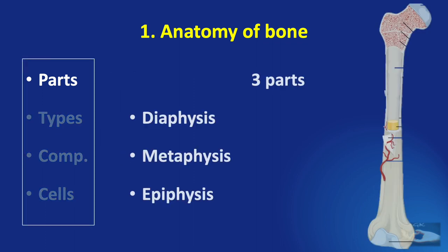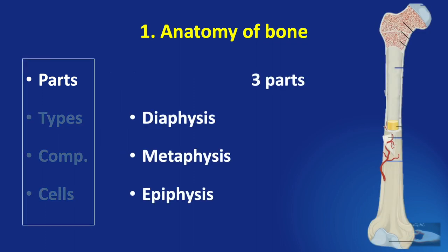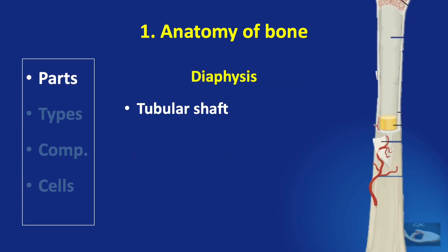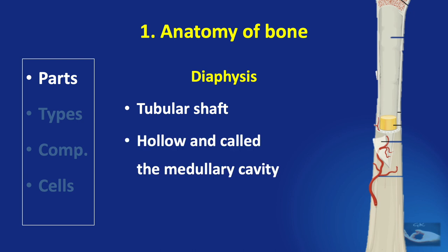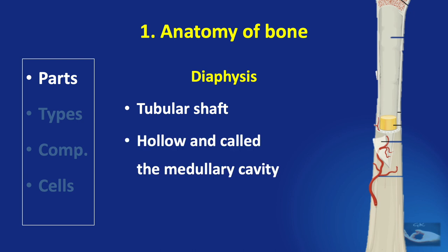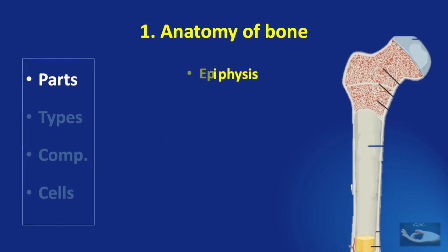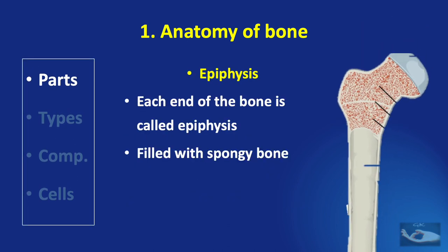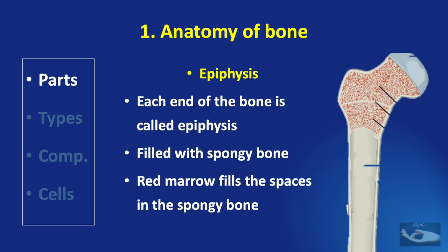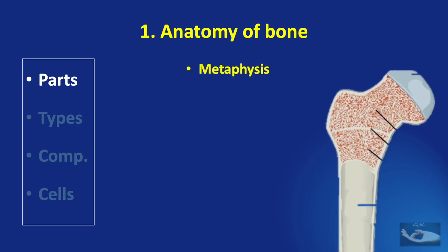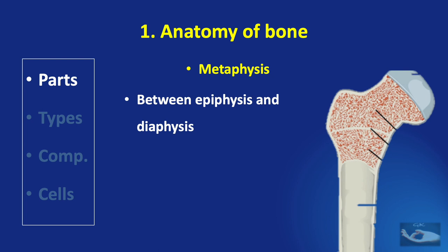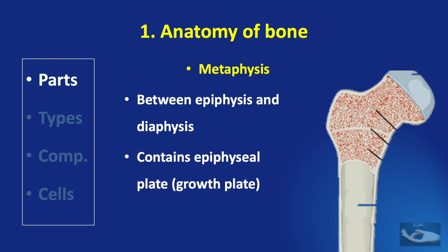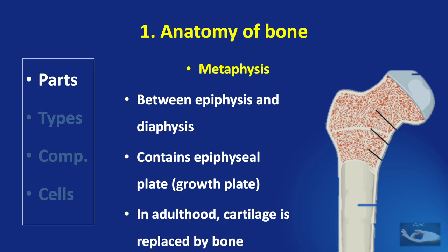The long bone consists of mainly three parts: the diaphysis, the metaphysis, and the epiphysis. The diaphysis is the tubular shaft which is hollow, called the medullary cavity, and filled with yellow marrow. The epiphysis is present at each end of the bone, filled with spongy bone, with red marrow in the spaces between. The metaphysis is between the epiphysis and the diaphysis, contains the epiphysial growth plate, and in adulthood, this cartilage is replaced by bone.